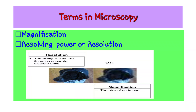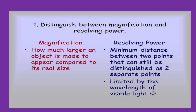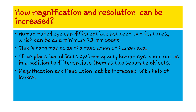Resolution is the ability to see items as separate and distinct — discernment, or picture clarity. Magnification relates to the size of the image, while resolution relates to how clear that image is.